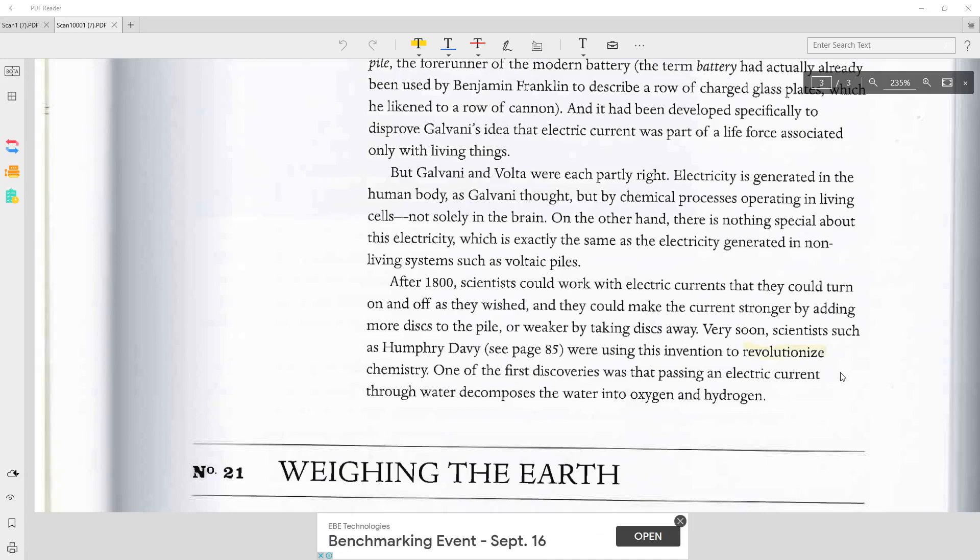After 1800, scientists could work with electric currents that they could turn on and off as they wished. And they could make the current stronger by adding more discs to the pile or weaker by taking discs away. Very soon, scientists such as Humphrey Davy were using this invention to revolutionize chemistry. One of the first discoveries was that passing an electric current through water decomposes the water into oxygen and hydrogen.